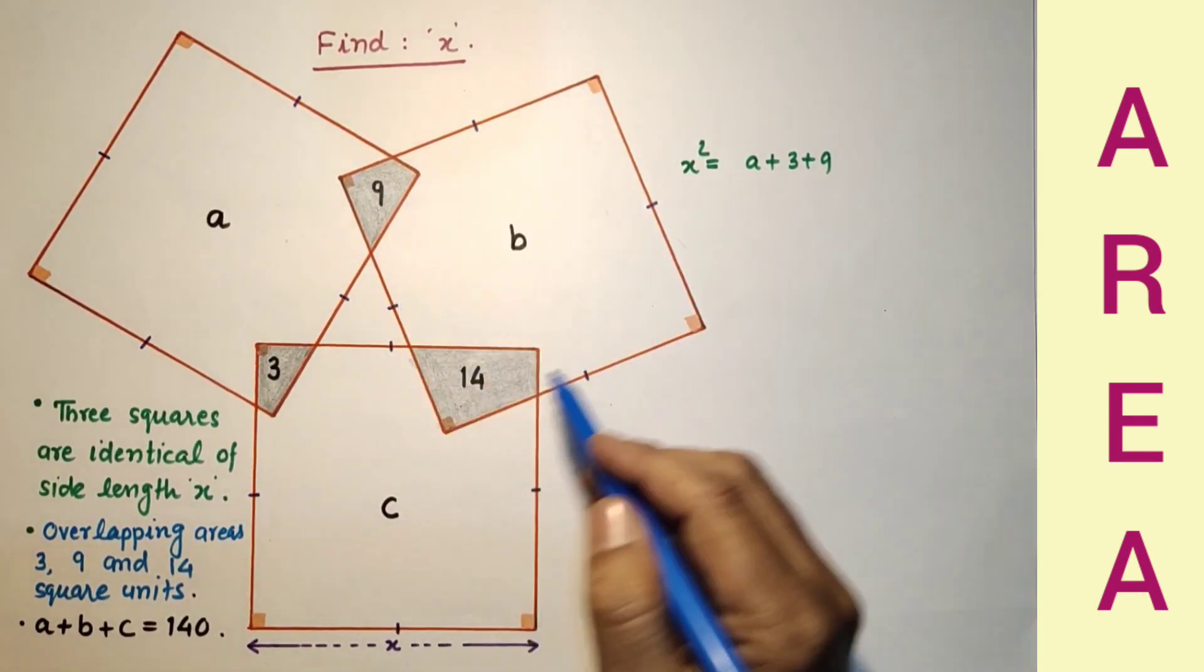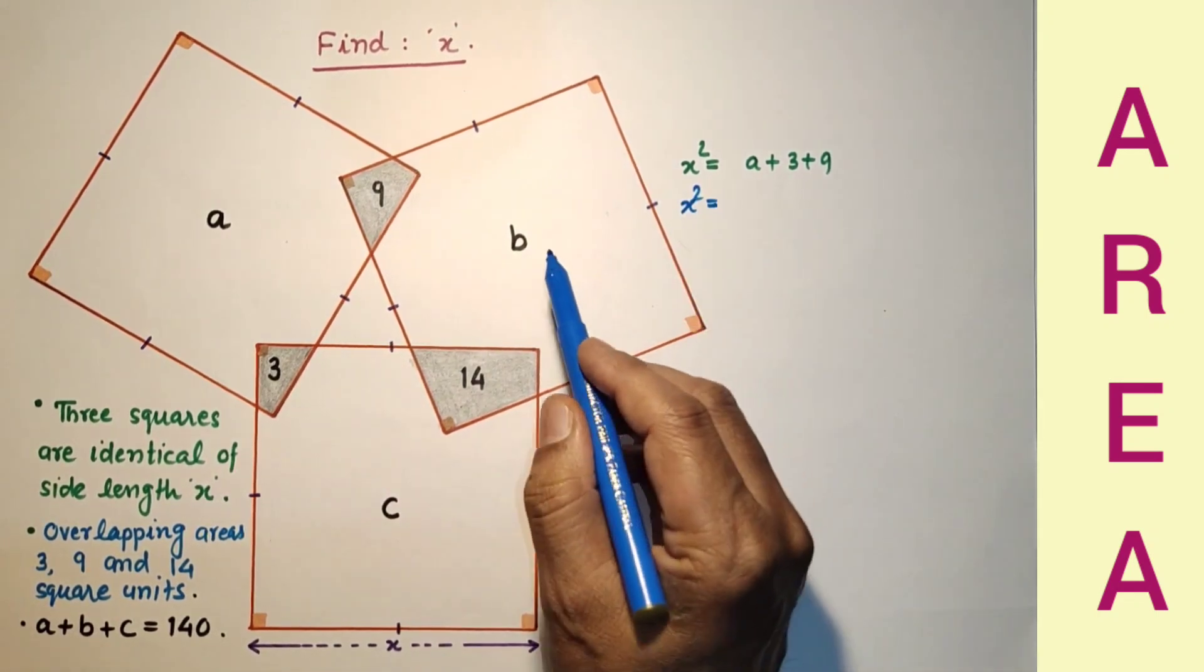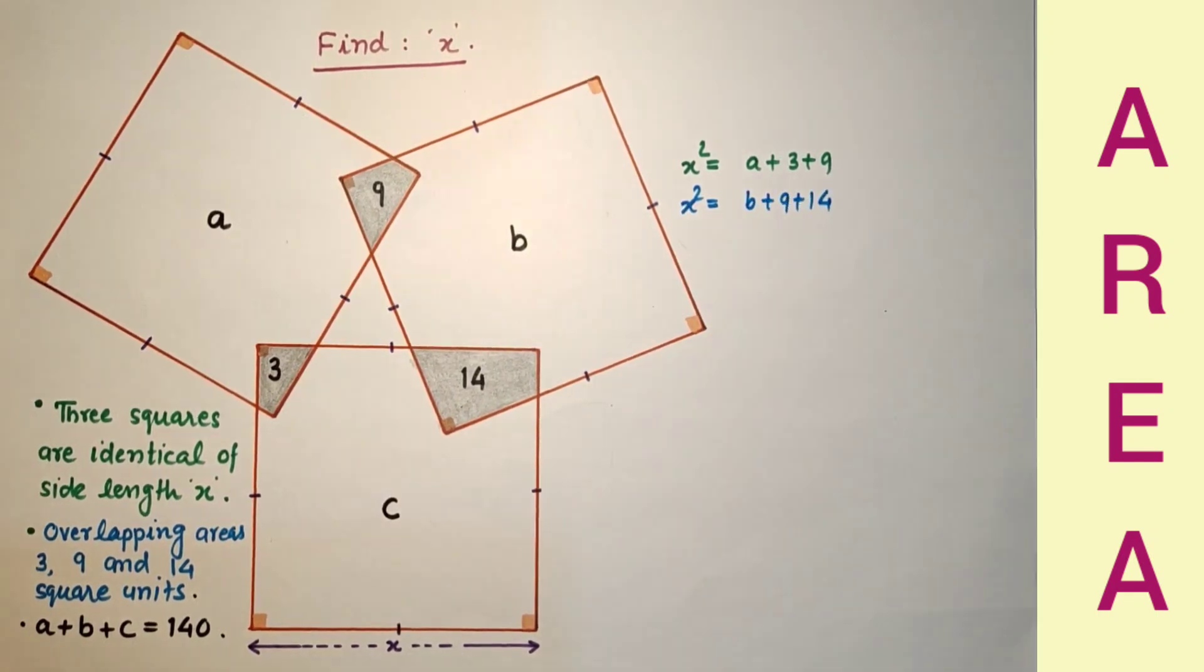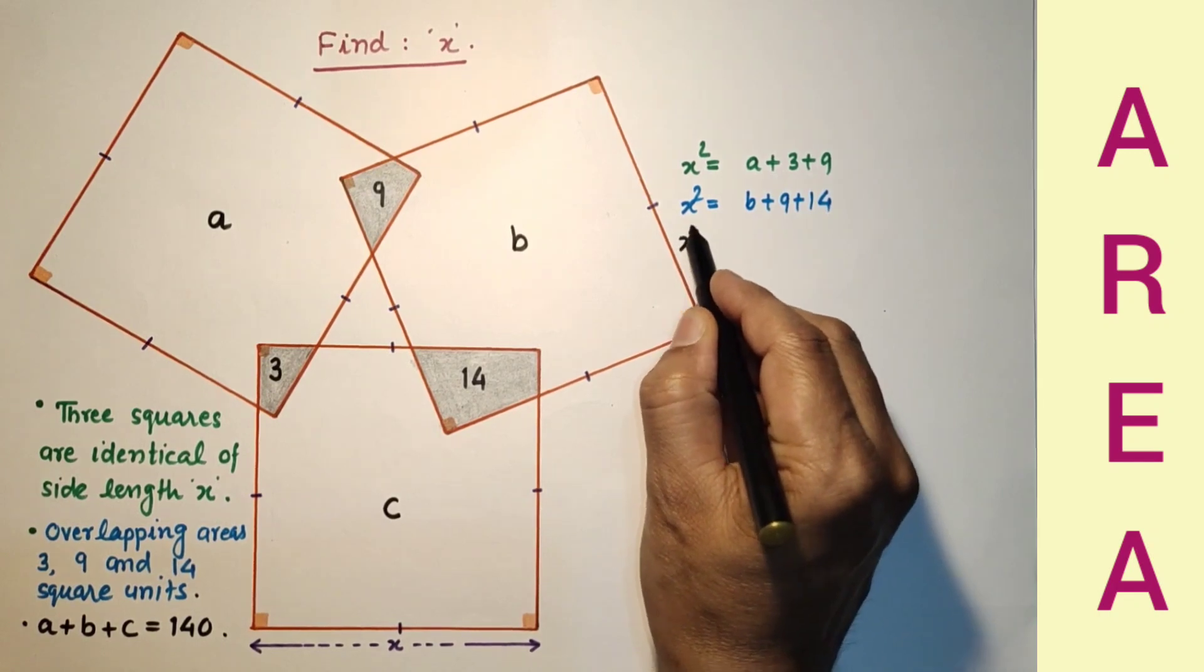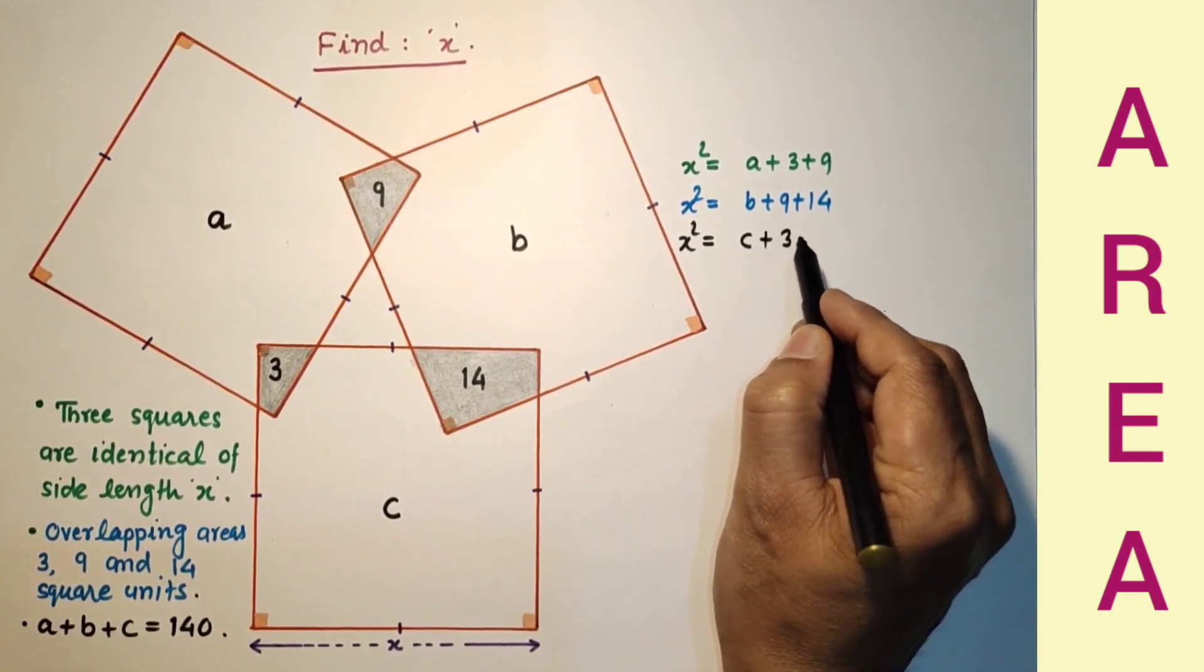Now this square's area is again x squared, which equals B plus 9 plus 14. And for this square's area, x squared equals C plus 3 plus 14.